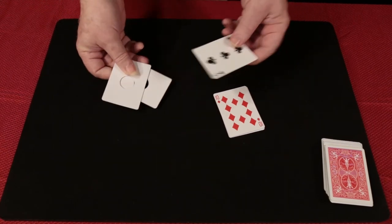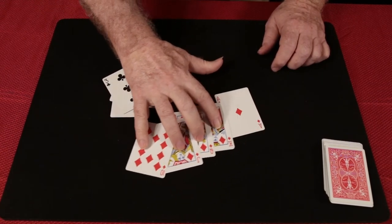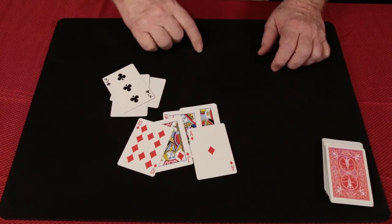There's our three of clubs. And right over here we have the ten, jack, queen, king, and our ace in the hole.